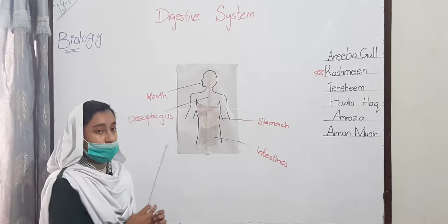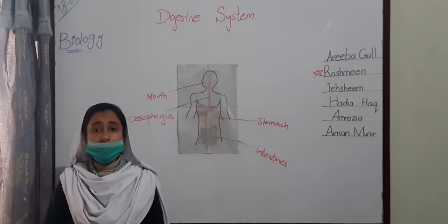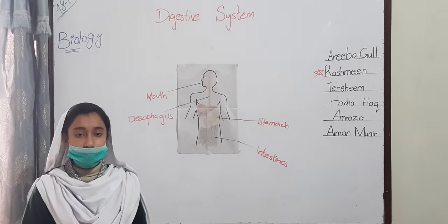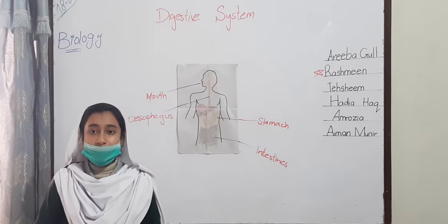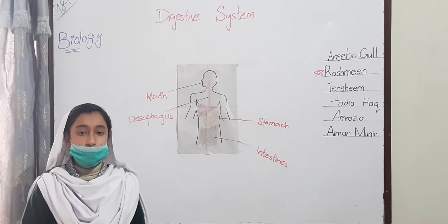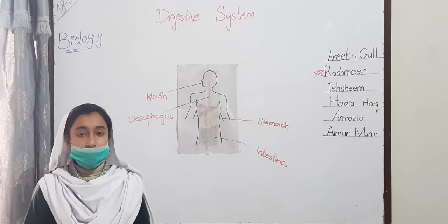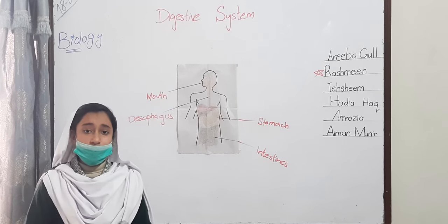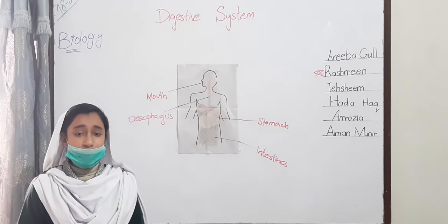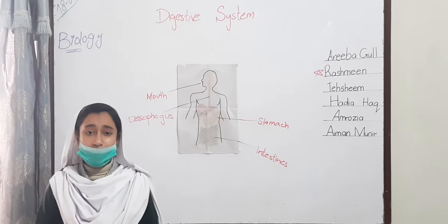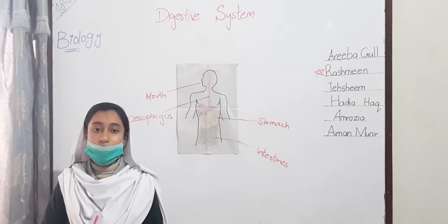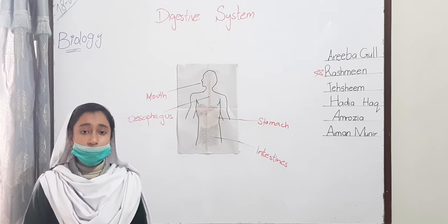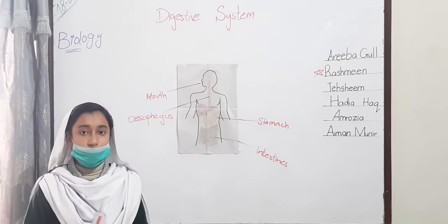Large intestine. The undigested food becomes solid and is called faeces. The faeces is stored in the last part of the large intestine called the rectum. We pass the faeces out of our body through the anus.